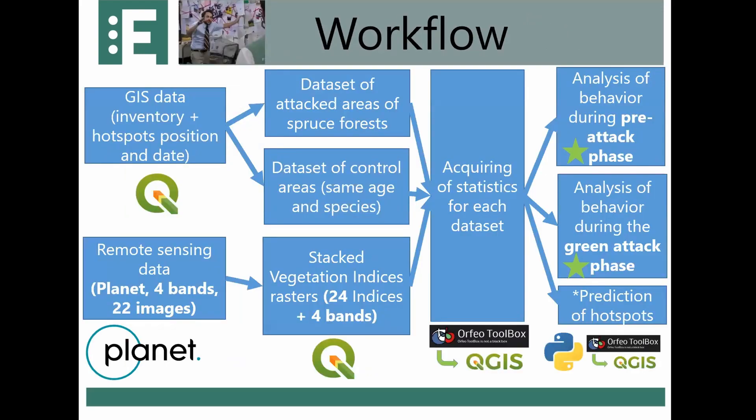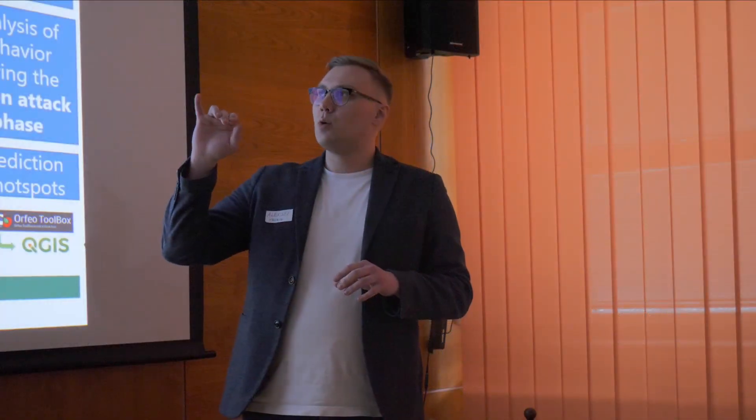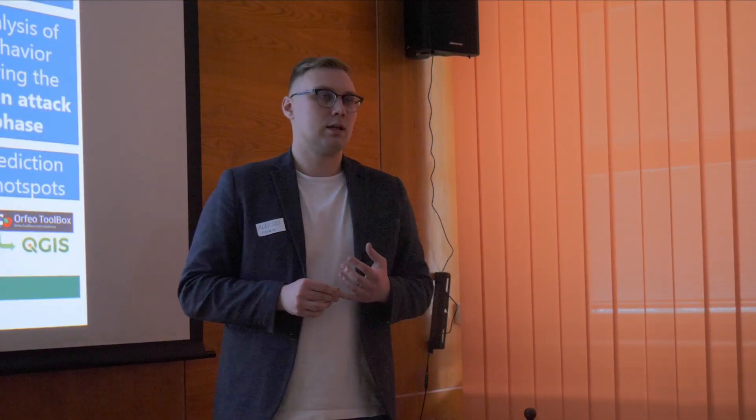Now the workflow. As input data we had two sources. One is remote sensing data — Planet, four bands, with 22 time-series images from April through end of September, covering the full vegetation season. The second source is GIS data as an inventory layer where we find characteristics of forest compartments and management units.